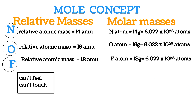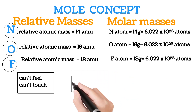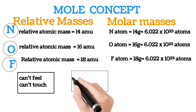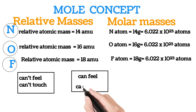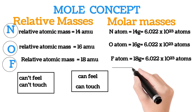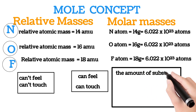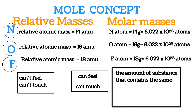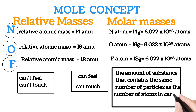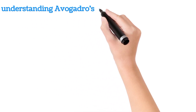These molar masses are big enough — we can weigh them, we can see them, and hence we can use them in the study of chemistry because they are tangible. That brings us to the concept of the mole. Simply put, the mole is the amount of substance that contains the same number of particles as the number of atoms in carbon-12. This number is called Avogadro's number, which is equal to 6.022 × 10²³.